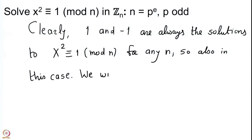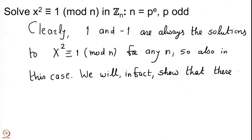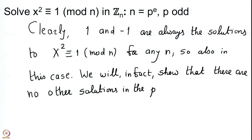We will actually show that there are no further solutions. When p is an odd prime and we are looking at Z mod n·Z where n is a power of this odd prime, x² ≡ 1 (mod n) has only 2 solutions: a ≡ 1 and a ≡ −1. Suppose a in the natural numbers is a solution; we will prove that a has to be congruent to 1 (mod p) or congruent to −1 (mod p).